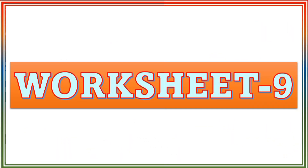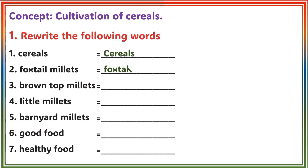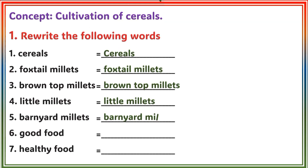Worksheet 9 Concept: Cultivation of Cereals, Section 1. Rewrite the following words: Cereals, Foxtail Millets, Brown Top Millets, Little Millets, Barnyard Millets, Good Food, Healthy Food.